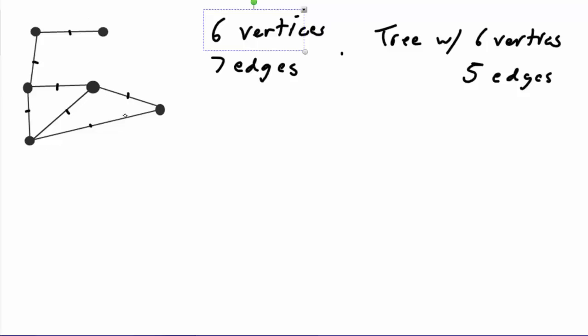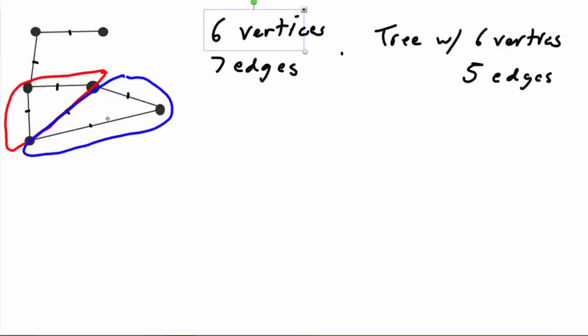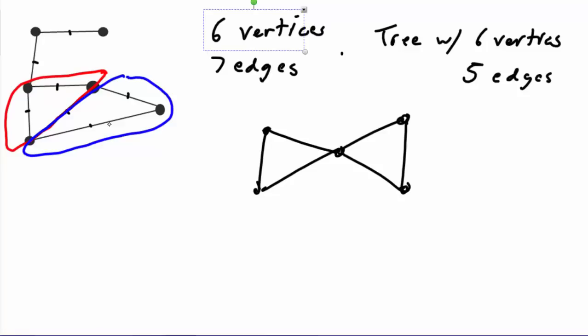It looks very similar to our previous example — here's one circuit circled in red and another circled in blue. We need to choose an edge from the red circuit to delete and an edge from the blue circuit to delete. But there's an important difference: the two circuits in the previous example had no edges in common, whereas here the red and blue circuits share an edge. That means they are no longer independent.